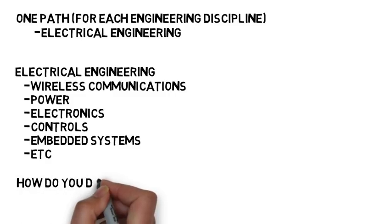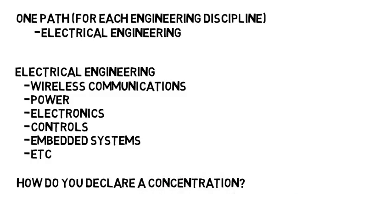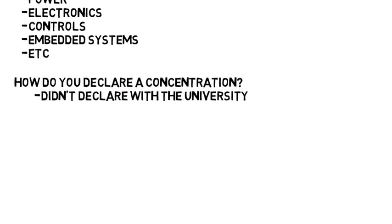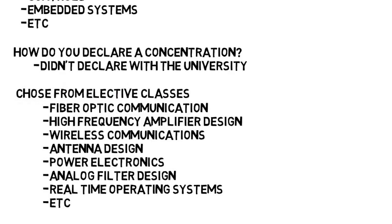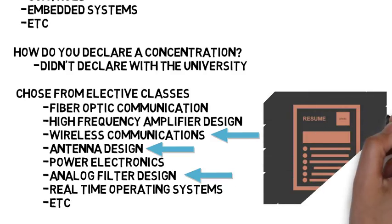Many people ask me how do you actually declare a concentration, and at my school you didn't actually declare one with the university. It was very unofficial. You simply chose from a long list of electives whichever ones you found most interesting. I chose the ones in wireless communications, but also some others. I was required to take at least three, but everyone chose their own mix of what they were interested in. So on my diploma it just says electrical engineering, but on my resume I specified my area of interest.